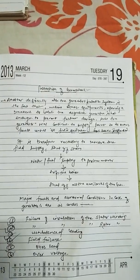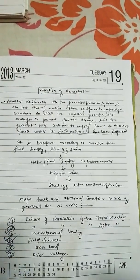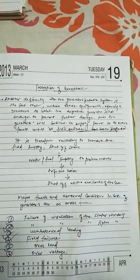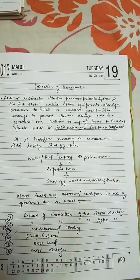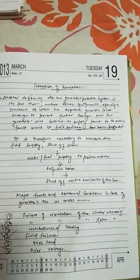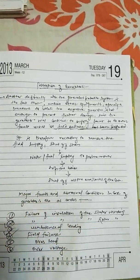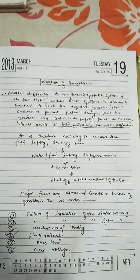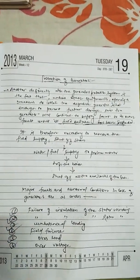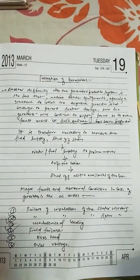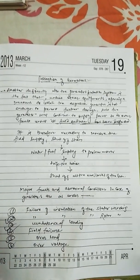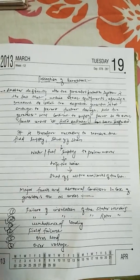However, it is not always necessary to isolate both the grid and the excitation and prime mover. Sometimes we have grid faults in which we need to only isolate the grid and run the generator on home load. For that, we have a generator protection philosophy where we divide the protection. Let us discuss what the major faults in generators are.